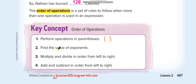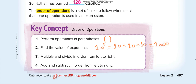The second step is to find the value of exponents. For example, 10 to the power of 3 means 10 times 10 times 10, which equals 1,000 — not 10 times 3. Similarly, 4 to the power of 2 doesn't mean 4 times 2 equals 8; it means 4 times 4 equals 16.